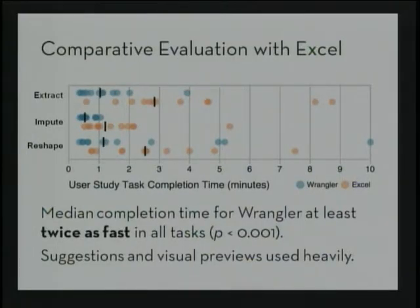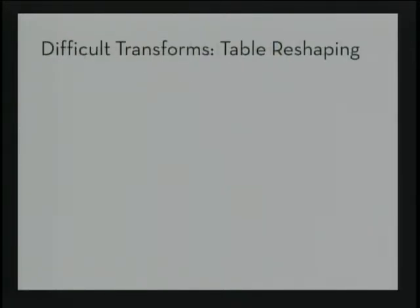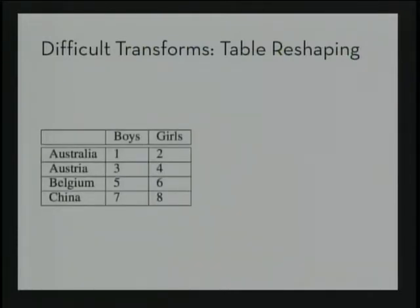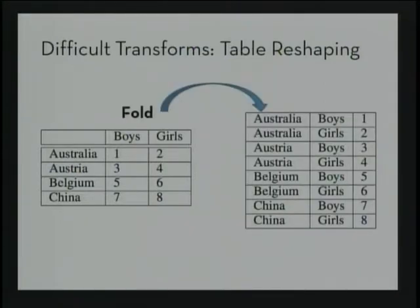We observed how people use the Wrangler tool — suggestions and visual previews were used heavily, and people primarily used visual previews to navigate the transformation space. However, we also observed types of transforms that caused difficulty. People found it difficult to specify and think about tasks that reshape the entire table — for example, converting 'boys' and 'girls' columns to name-value pairs, an operation we call a fold, and its inverse, an unfold. These are difficult for users but actually quite easy to recognize and apply automatically.